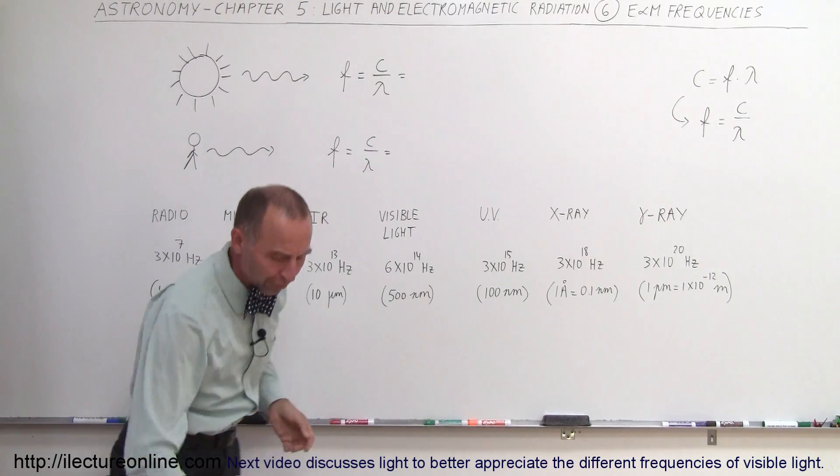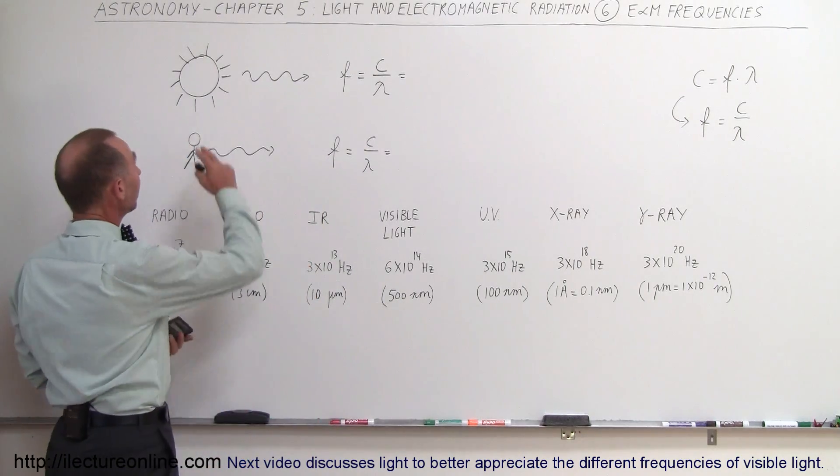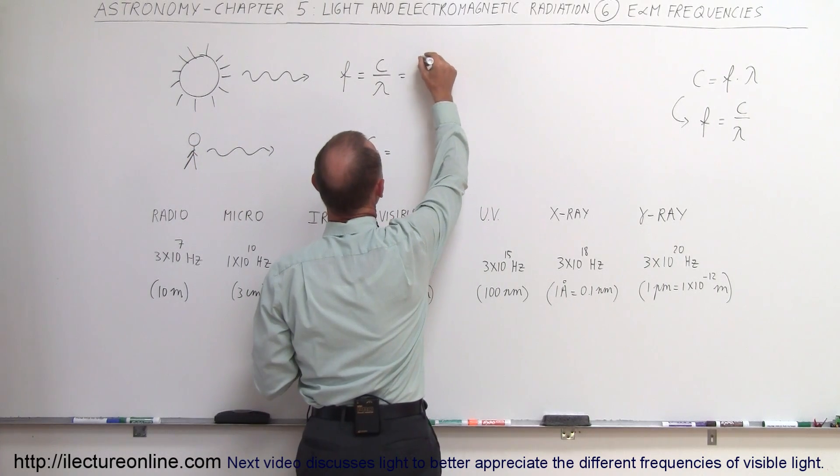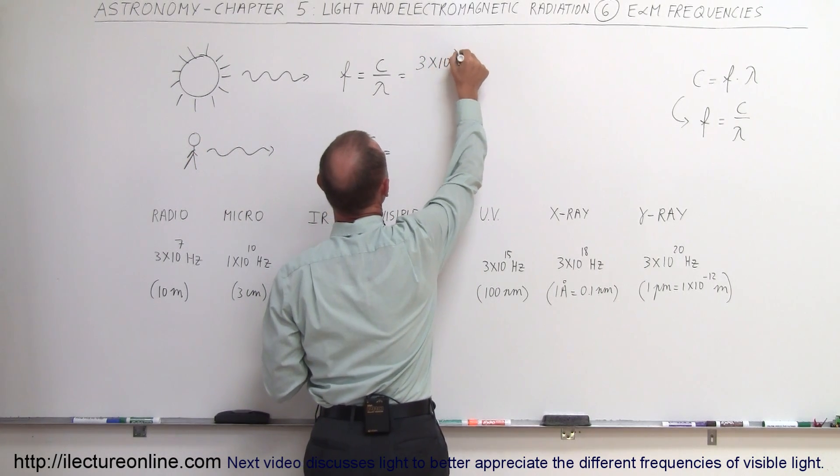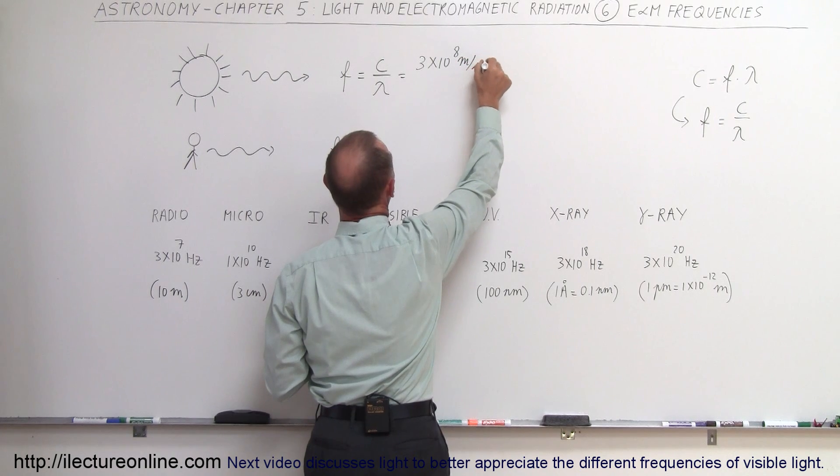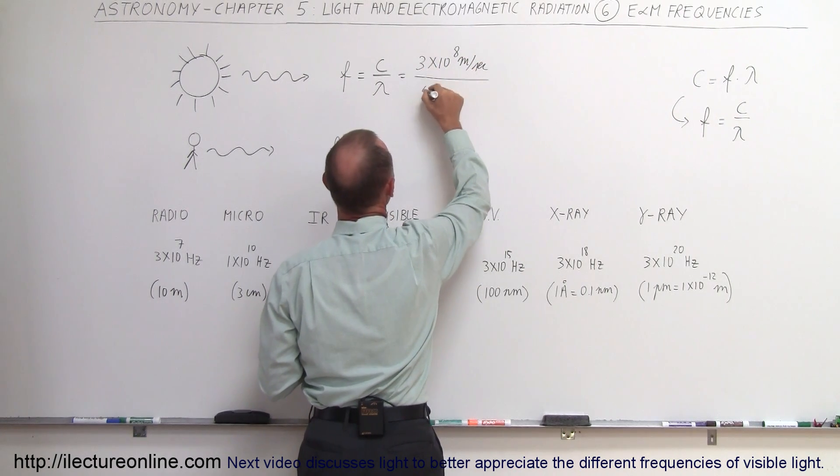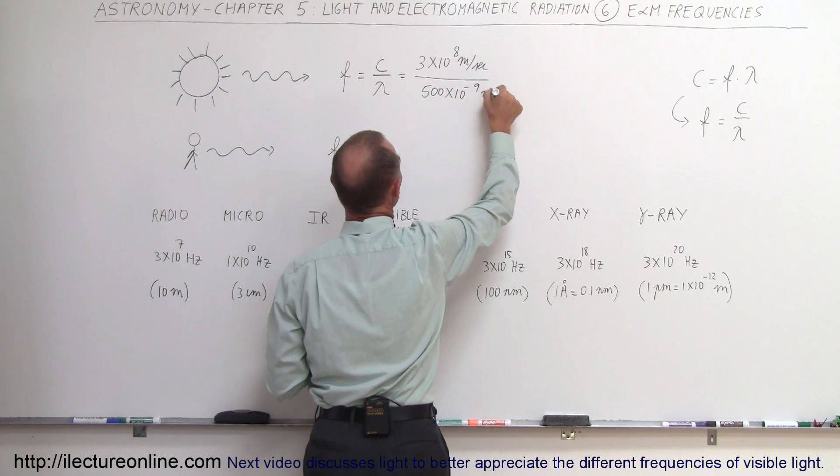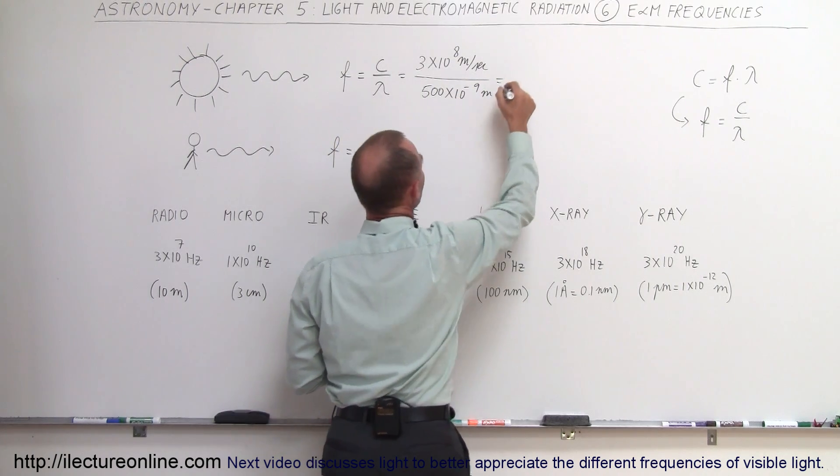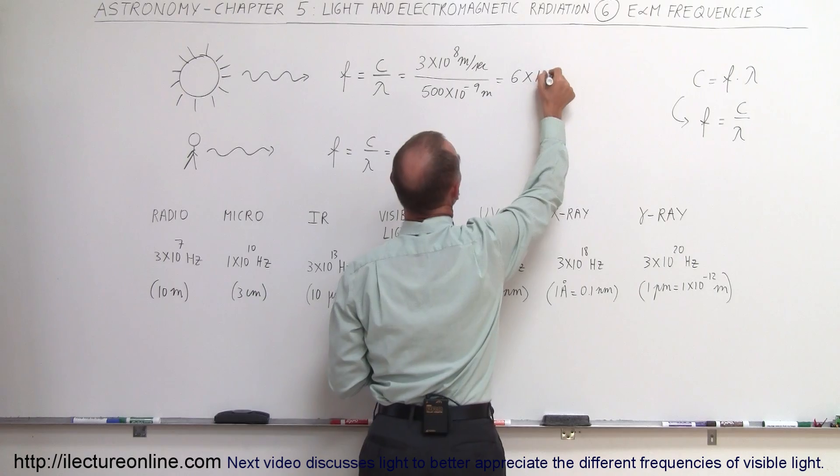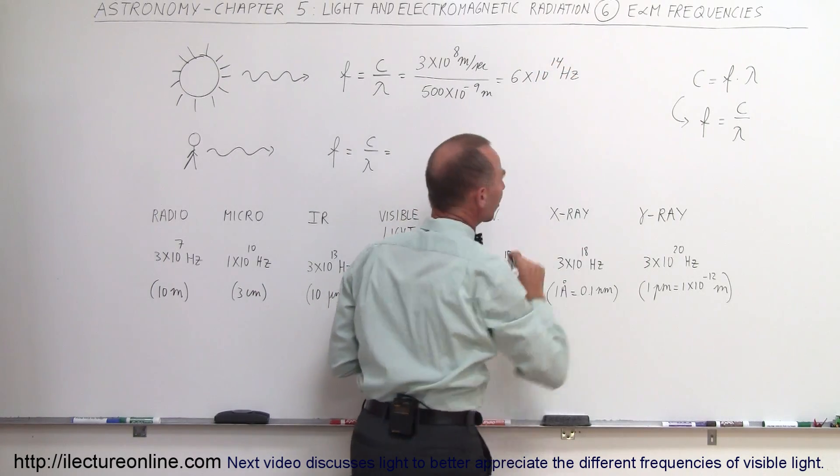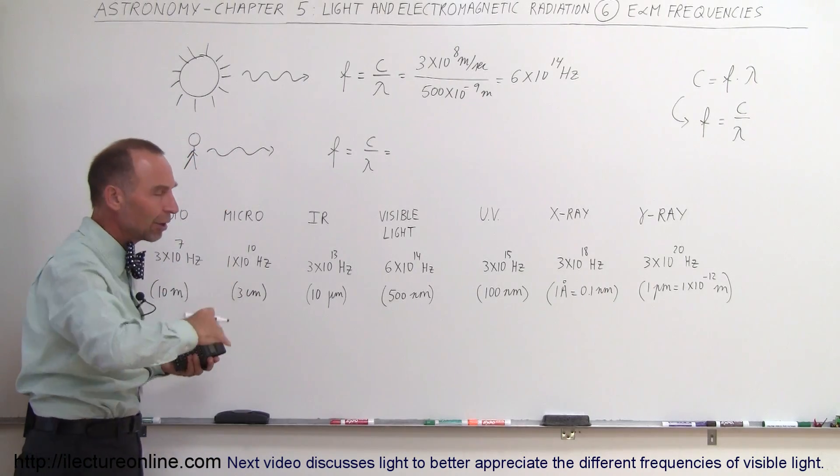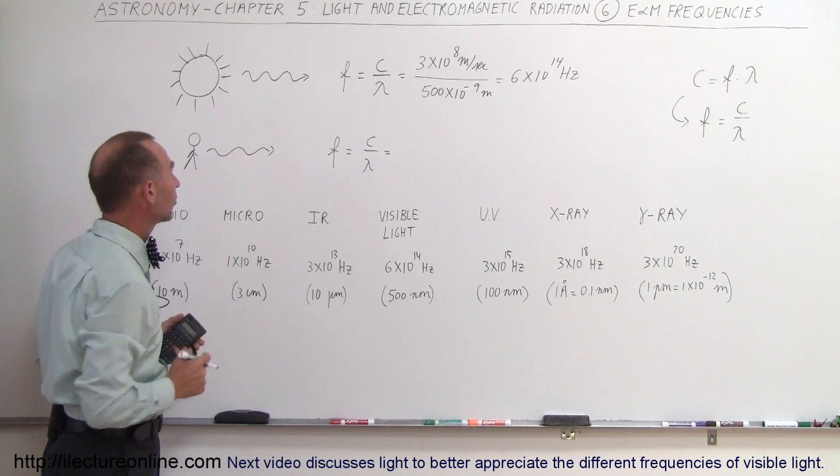For a couple of things that we're very familiar with, for example sunlight, we can figure out the frequency. Just for some practice, we can say the speed of light is 3 times 10 to the 8 meters per second, and the wavelength of visible light is about 500 nanometers, which is 500 times 10 to the minus 9 meters. If we calculate that, we get 6 times 10 to the 14 hertz, which is 600 trillion times per second. That's the vibrational frequency of typical sunlight.